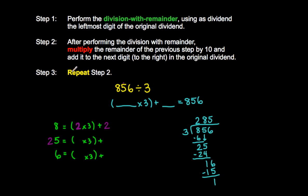Step 3: repeat step 2. Perform division with remainder, multiply the remainder by 10, add it to the next digit, and keep going until you run out of digits. So what number times 3 gives me 25? 8 times 3 is 24 — so that's 8. And 24 plus what gives us 25? 1. Then I multiply the remainder by 10: 1 times 10 is 10, and I add that to the next digit in the original dividend. 10 plus 6 is 16. Then I perform division with remainder again: 5 times 3 gives me 15, with a remainder of 1. So 5 times 3 is 15, plus 1, is 16.